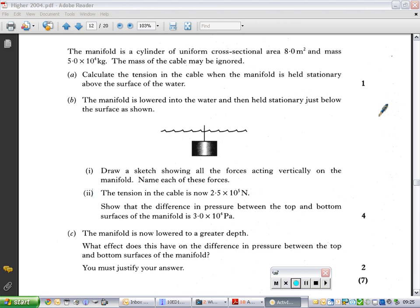I'll show you solutions in a second. The tension in the cable is now 2.5 times 10 to the 5 newtons, which means it's dropped since part A, because you should have worked out the tension in the rope in part A. It has now dropped since part A. Show that the difference in pressure between the top and bottom surface of the manifold is 3 times 10 to the 4 pascals. The first thing that's really making you understand here is the difference in pressure. What is the difference in pressure? What does the difference in pressure allow you to calculate?